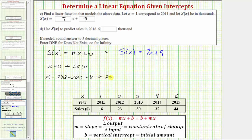So eight corresponds to the year 2018, because 2018 is eight years after 2010. So we need to find the value of S(8), which would be equal to seven times eight plus nine, which equals fifty-six plus nine, which equals sixty-five.